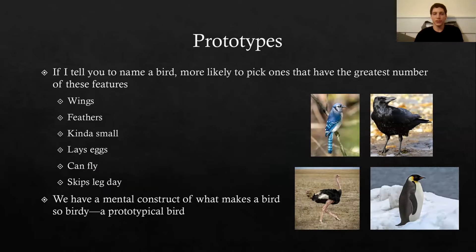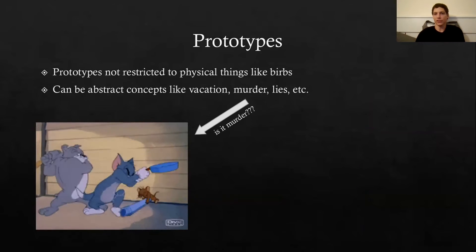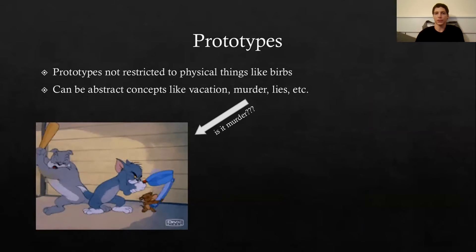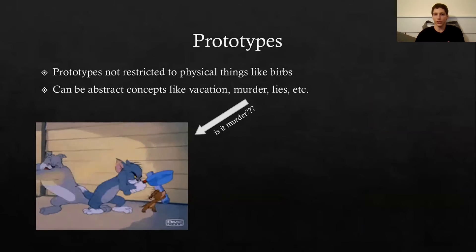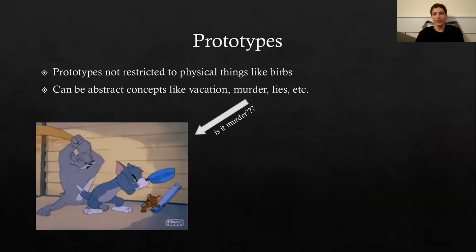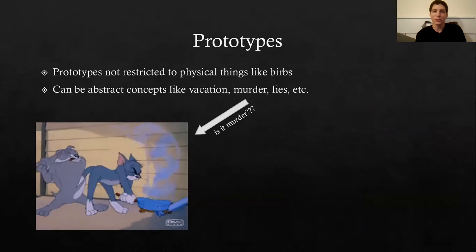That points to the idea that you have a mental construct of what makes a bird 'birdy,' and those things culminate into what's called a prototypical bird. The notion of prototypes is very important, and prototypes can be applied to a lot of things — they don't all have to be physical things like birds. They can also be abstract concepts, like vacation or murder, which I've illustrated here with a gif of Tom and Jerry and their special guest Spike, all beating each other with household items.